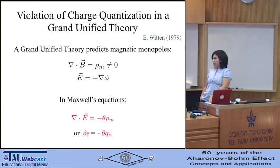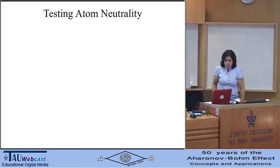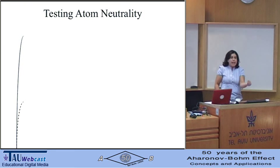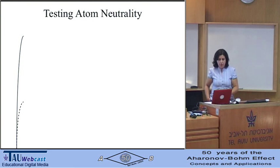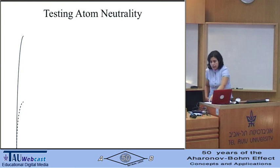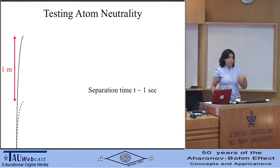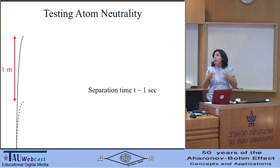The theory describing infinitesimally charged atoms is based on this. Now for the experiment: we take rubidium atoms and launch them vertically in the gravitational field of the Earth. The wave function is split by the momentum splitting, and for certain values of the momentum splitting the components can stay separated by a meter for about a second before coming back down and interfering.